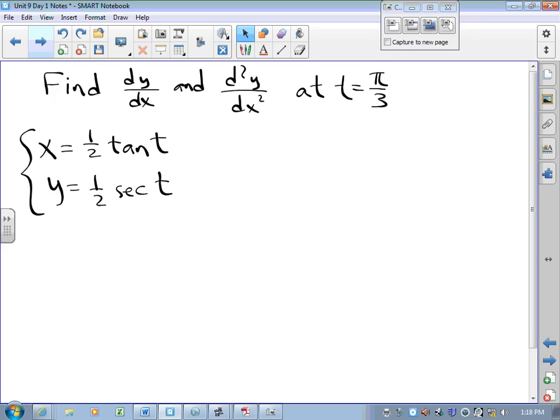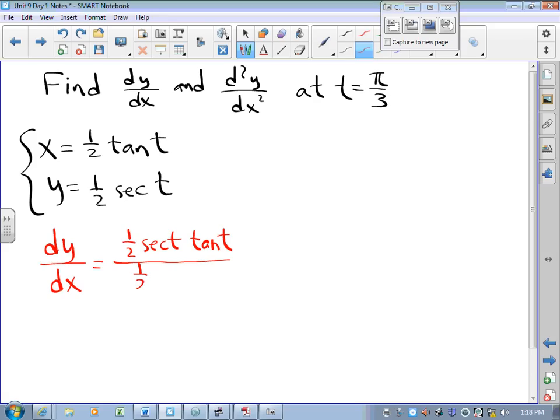Two things to find. First we'll find the derivative of y with respect to x. The derivative of y with respect to x is the derivative of y with respect to t, that's the derivative of one half secant t, divided by the derivative of x with respect to t, that's the derivative of one half tan t. Then all we need is a little bit of trigonometry that's sine over cosine over one over cosine, that is sine t. And we are going to evaluate that at pi over 3 and so we get radical 3 over 2.